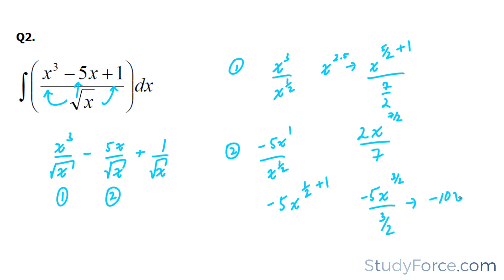I end up with negative 10x 3 over 2 over 3. So, so far, we have the following.